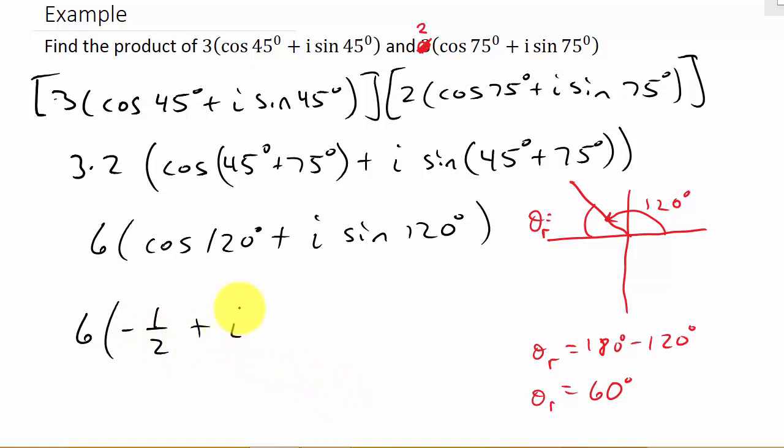Plus i times the sine of 120. Well, we use our reference angle 60. The sine of 60 is √3/2. We are in the second quadrant. Sine is positive, so it's positive √3/2.